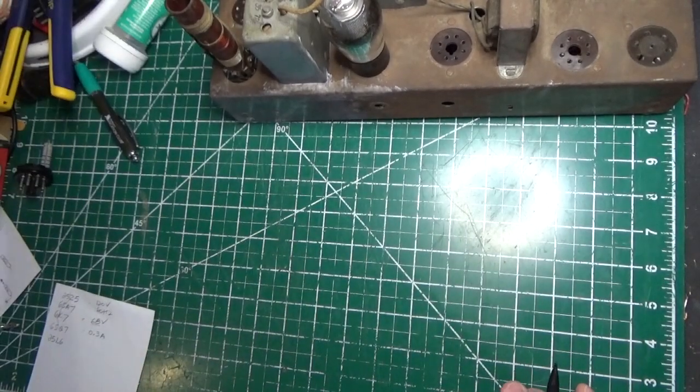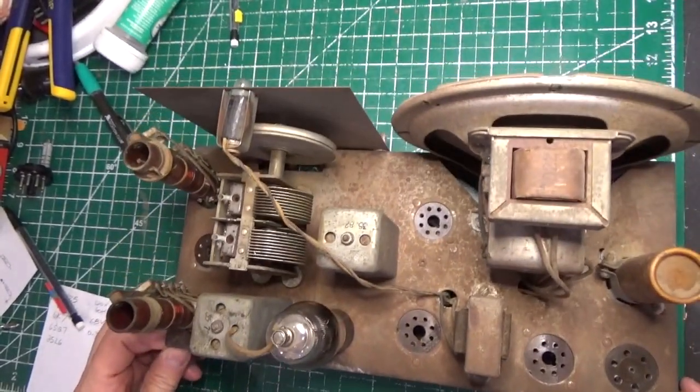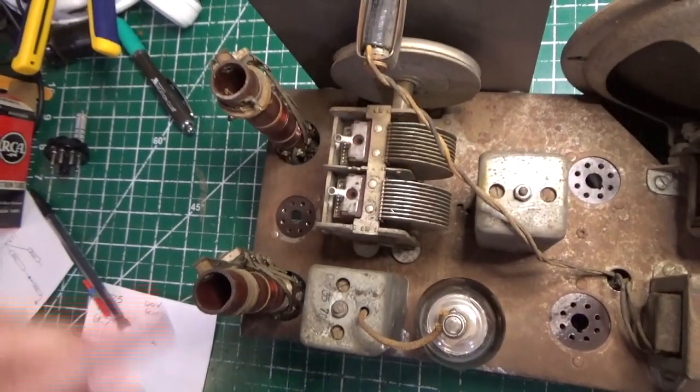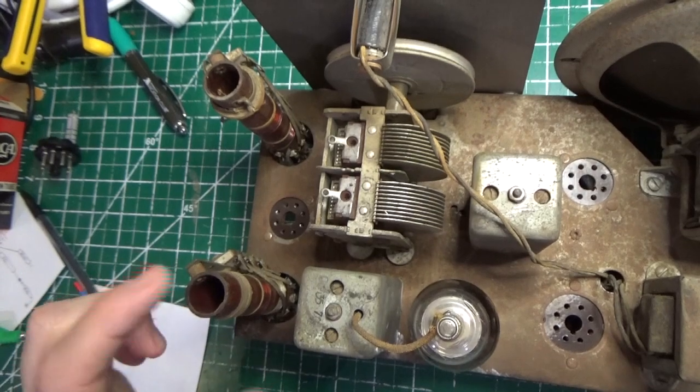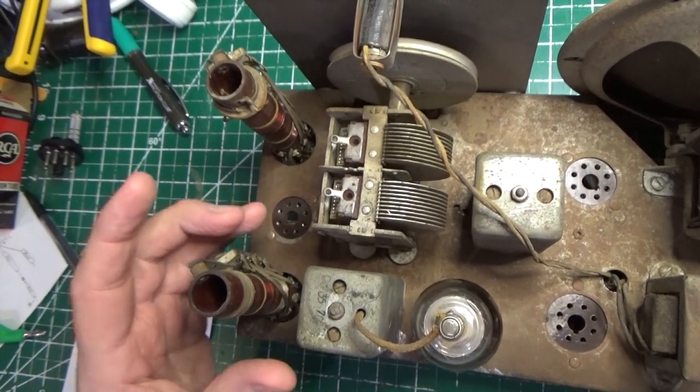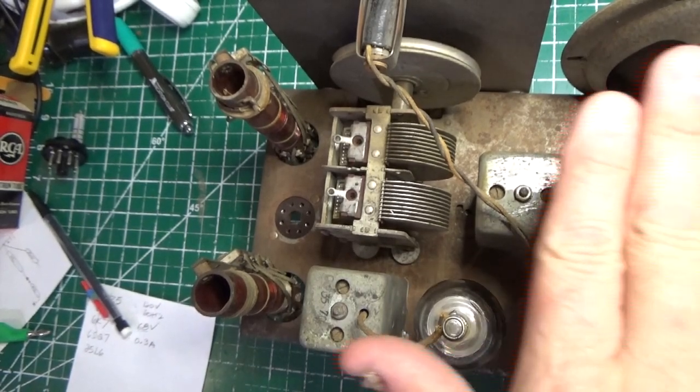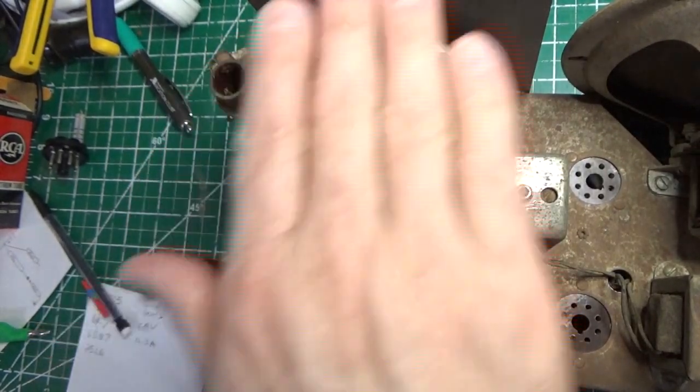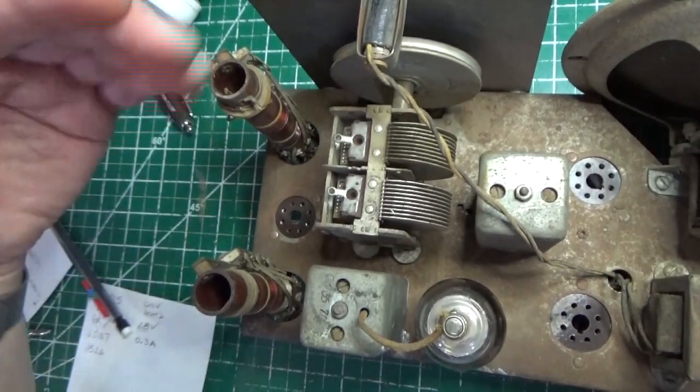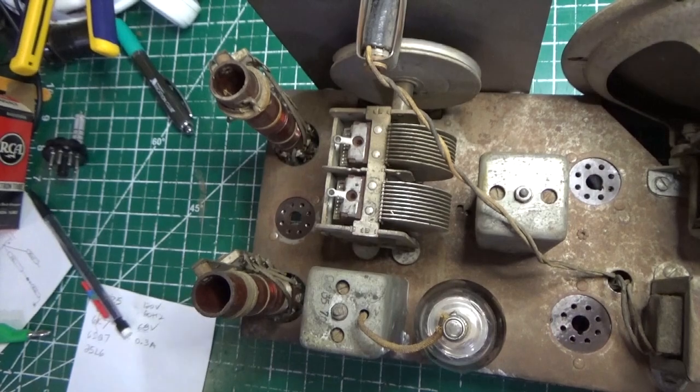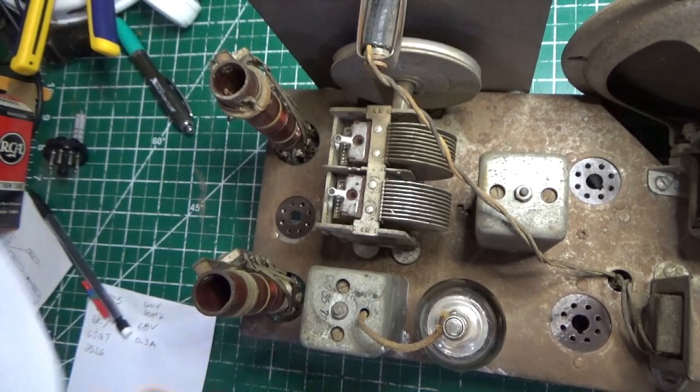But I also want to show you something else that's a little bit unique or weird about this radio that I'm not thrilled about, but that's okay. And that is the oscillator and the antenna coils are just left exposed. Typically these things would be in a cover, in a metal can or something to protect them. When you work on this radio, if you look at the height, these are basically the tallest point aside from here. So if you try to stand this up upside down and work on it, it's going to lean back and put pressure on this coil.